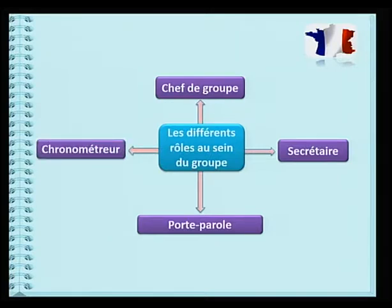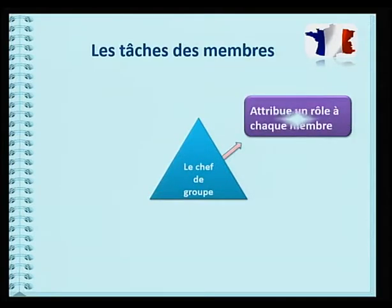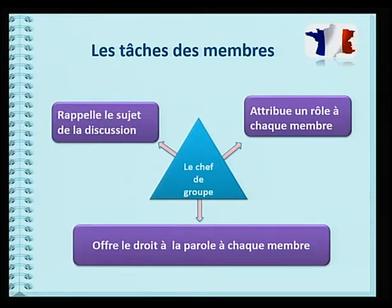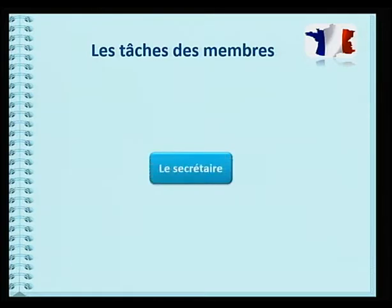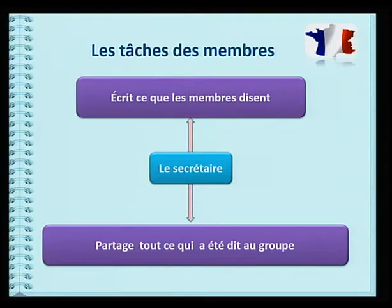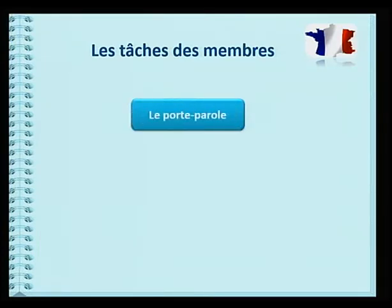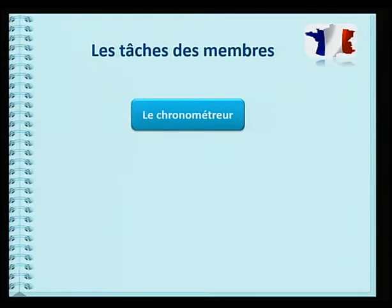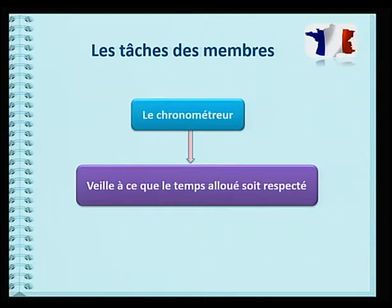Mais que font précisément le chef de groupe, le secrétaire, le porte-parole et le chronomètreur ? Le chef de groupe attribue un rôle à chaque membre du groupe. Il offre à chacun la possibilité de parler et surtout, il rappelle le sujet de la discussion. Le secrétaire écrit ce que les autres disent et retransmet les travaux au groupe. Le porte-parole présente les résultats ou les observations de l'expérience menée par son groupe à la classe lors de la mise en commun. Le chronomètreur veille à ce que le temps alloué pour la discussion soit respecté.